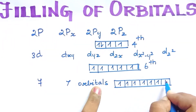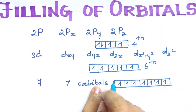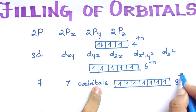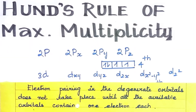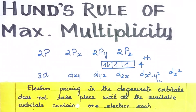For F orbitals, there are 7 orbitals, so each of the first 7 electrons fills one orbital singly. Pairing begins only at the 8th electron. So pairing takes place at the 4th, 6th, and 8th electrons in P, D, and F orbitals respectively. This is Hund's Rule of Maximum Multiplicity: electron pairing in degenerate orbitals does not take place until all available orbitals contain one electron each.